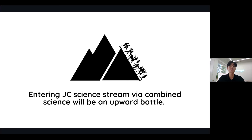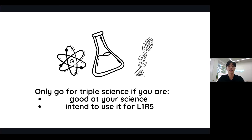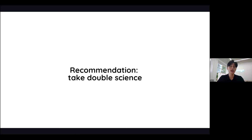Only go for triple science if you're already very good at your science and intend for it to play a heavy part in your L1R5 strategy. Technically your L1R5 only requires one science, but if your remaining sciences perform well, you can include them in your L1R5 as your remaining relevant subjects. Personally, I would recommend taking double science, as when you move on to JC, you will only take two out of three sciences. The compulsory one will of course be chemistry.